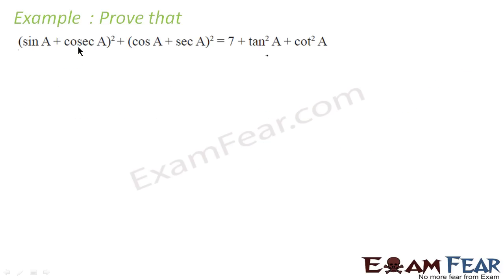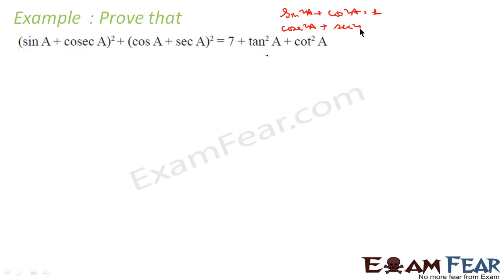Next example: (sinA + cosA)² + (cosA + secA)² = 7 + tan²A + cot²A. We have cosec, sec, sin, and cos here. We know that sin²A + cos²A = 1. Let us expand this first and see what we get.